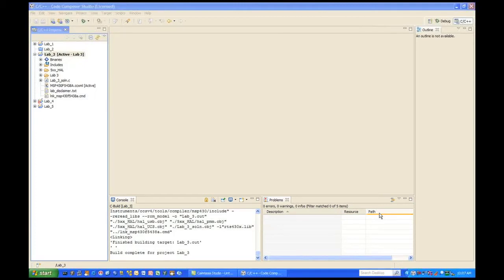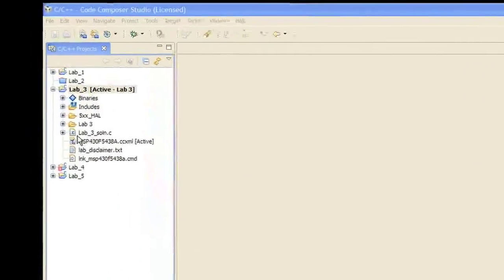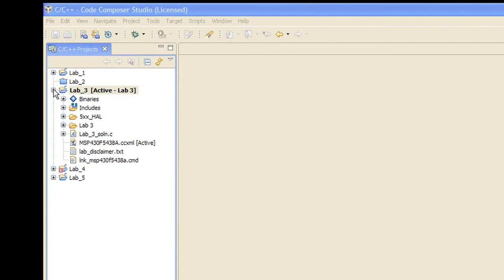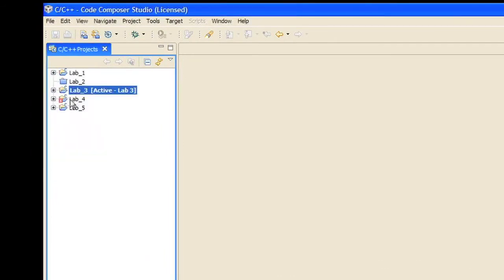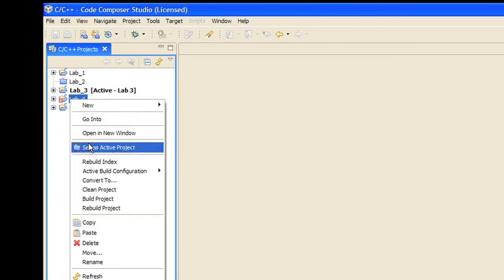This is going to end up saving a ton of power on the board. So following along in the workbook, go to step 1 in the procedure. We need to set Lab 4 as the active project. You can go ahead and minimize Lab 3. Set Lab 4 as the active project.